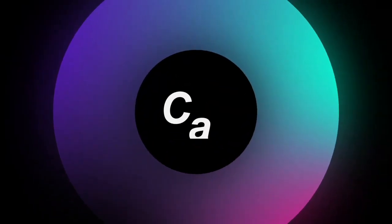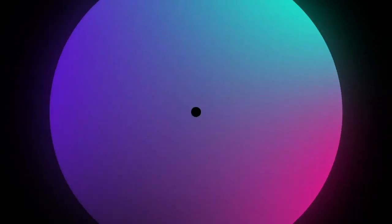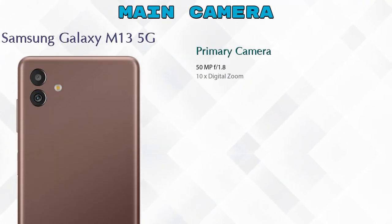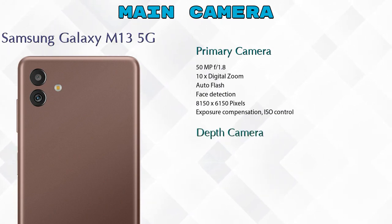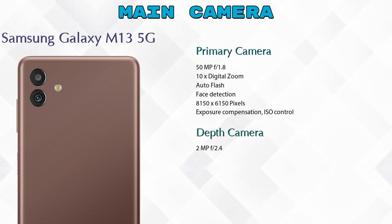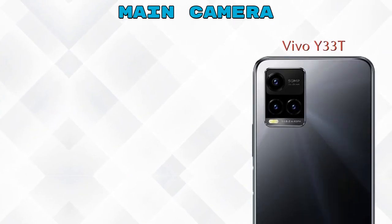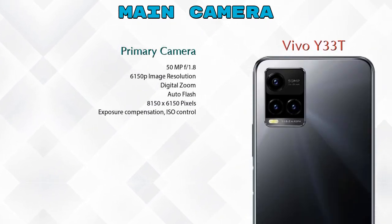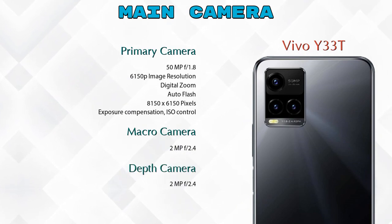Now let's see the detail about our favorite feature — camera. First, talking about the rear camera: Galaxy M13 5G has two cameras — a primary camera and a depth camera. Y33T has three cameras — a primary camera, a macro camera, and a depth camera.